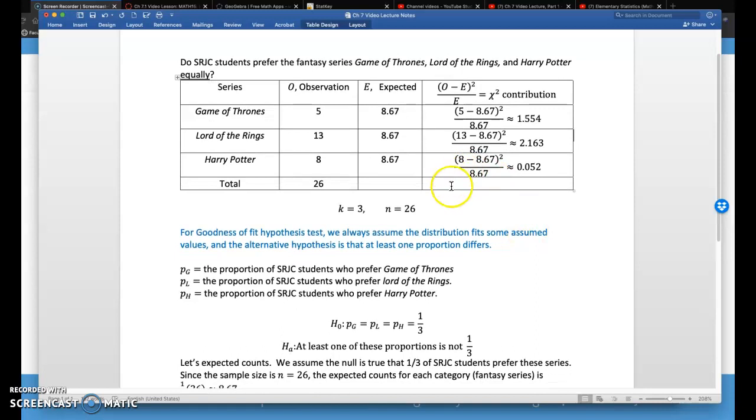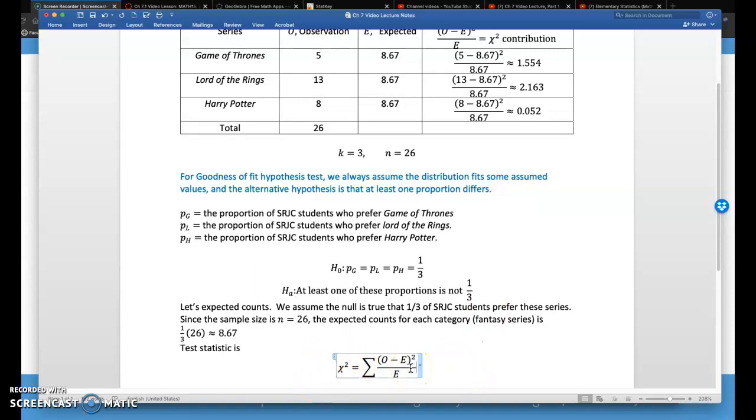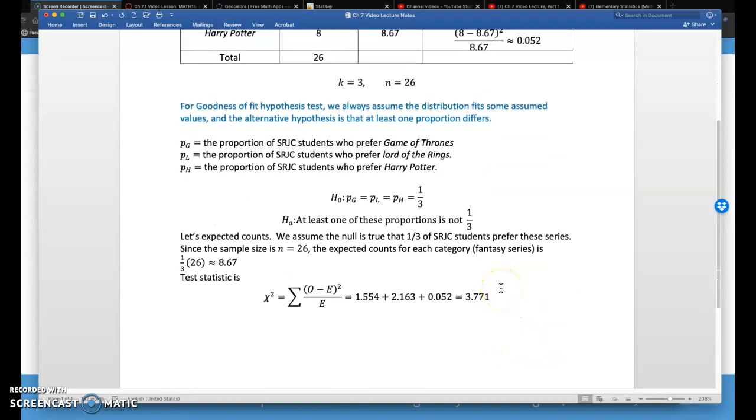So then finally to get the chi-squared test statistic, my test statistic is just going to be the sum of all those: 1.554 plus 2.163 plus 0.052. I got that to be about 3.771 is my chi-squared test statistic. I want to note right here, my degrees of freedom is defined to be k minus 1. So in this case, there's three categories minus 1, I have two degrees of freedom.